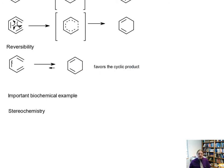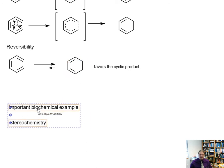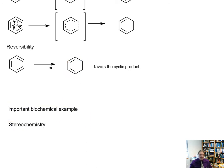And the reason for that is that we are converting a pi bond into a sigma bond, and sigma bonds are stronger than pi bonds. But this is not always the case.